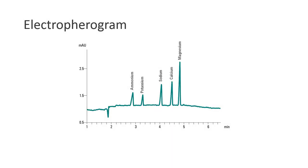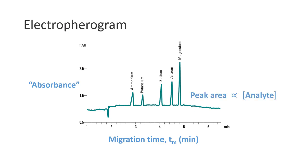There are three important aspects of an electropherogram. The migration time, which is the x-axis; the absorbance, which is the y-axis; and the peak area, or more correctly, the corrected peak area.